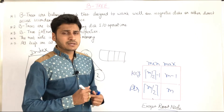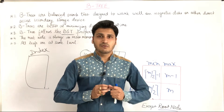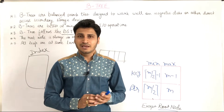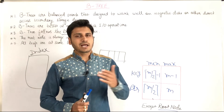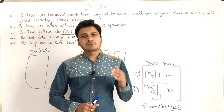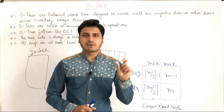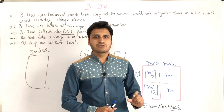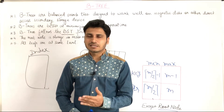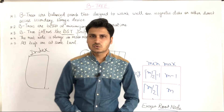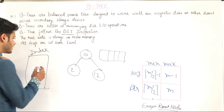For example, if we have to find a particular topic or chapter in a book, and we look through every page to find the topic, then it will take much more time. But what do we do? We go to the index, find the chapter, find the topic in the chapter, and go directly to the page number — which reduces the time. Similarly, in B-tree there is an indexing concept.